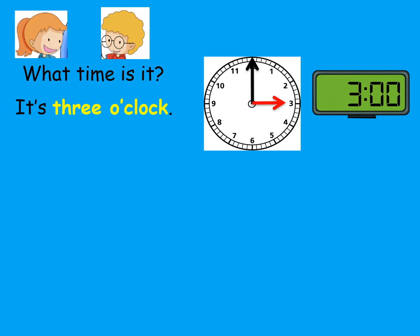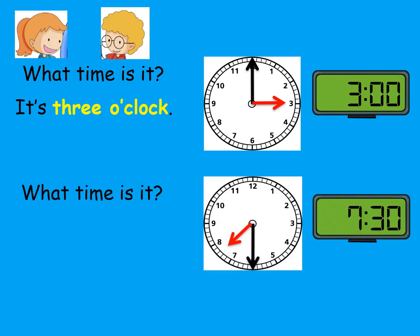Jenny says, 'Thank you, Andy. Then how about this? What time is it, Andy?' Andy says, 'Can you see the short hand? It points to the middle between 7 and 8, and the long hand points to 6. It's half past 7.'